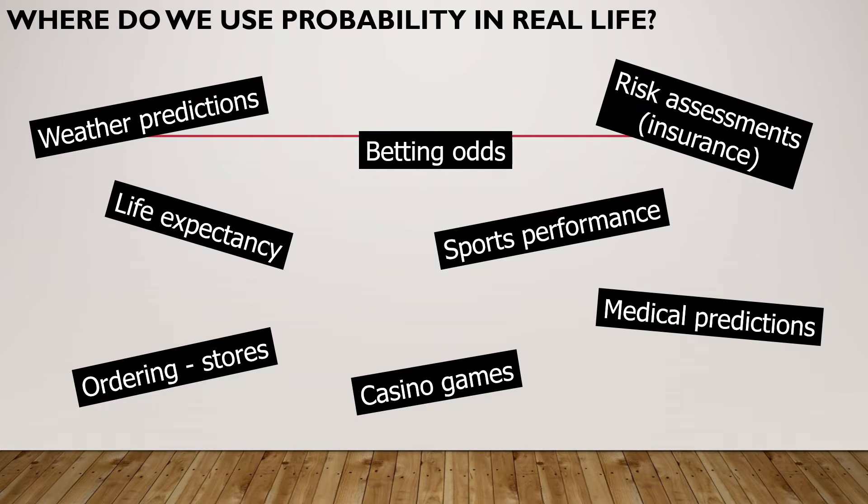Life expectancy. Ordering in stores use probability as they often use the weather to predict the temperatures and therefore whether they should be ordering umbrellas or ice creams. Betting odds are all to do with probability as of sports performances in casino games. Risk assessments and medical predictions also use probability.